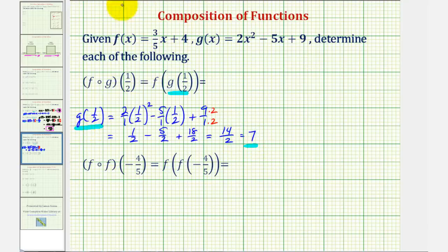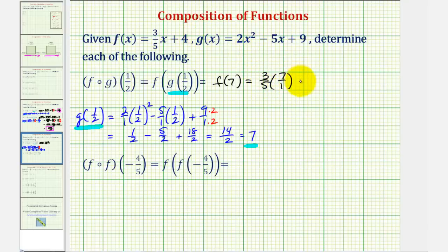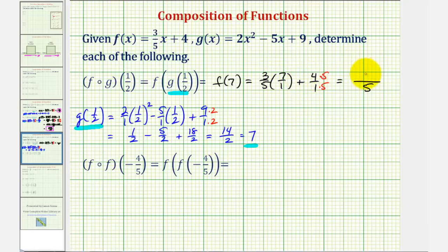Since g of one-half equals seven, f of g of one-half is equal to f of seven. And f of seven would be equal to three-fifths times seven plus four. Notice our denominator here is going to be five. Let's convert four over one to fifths by multiplying by five over five. Our denominator is now five, and the numerator would be twenty-one plus twenty, or forty-one-fifths.